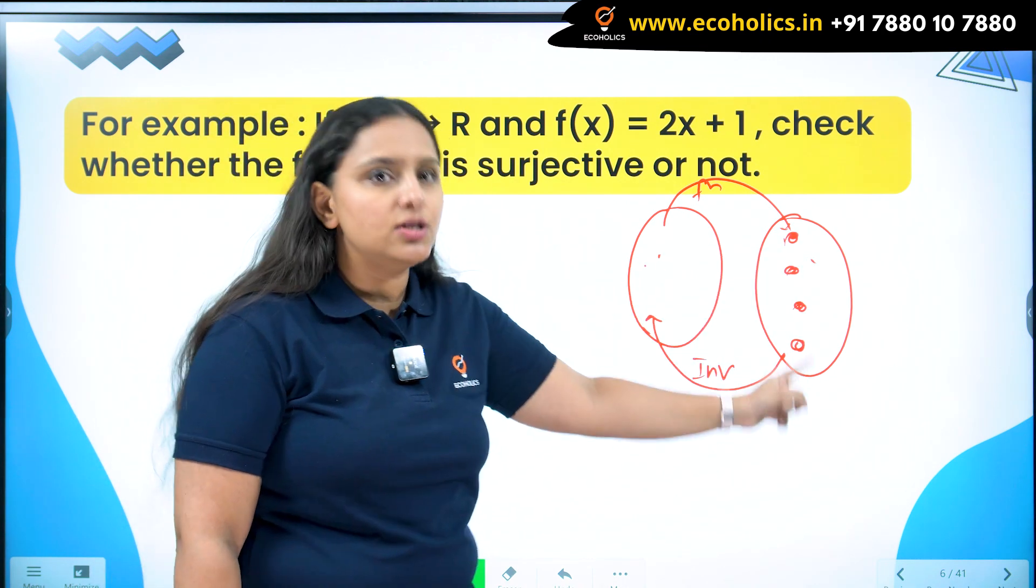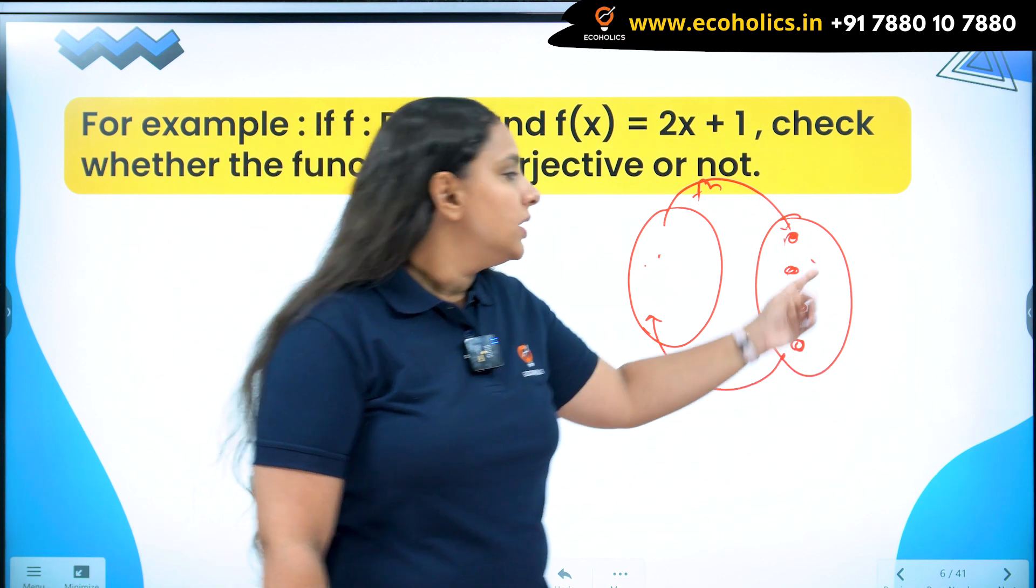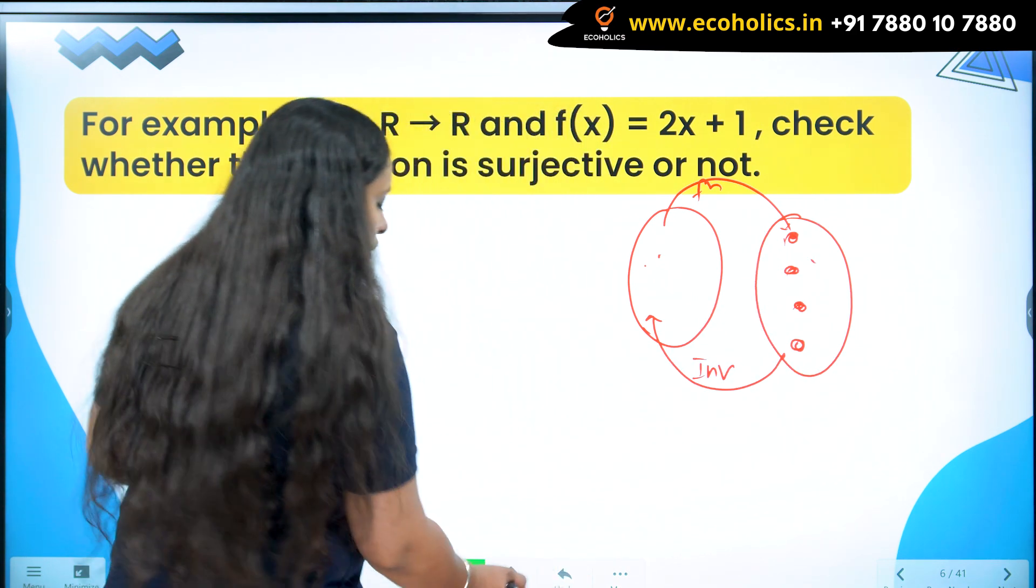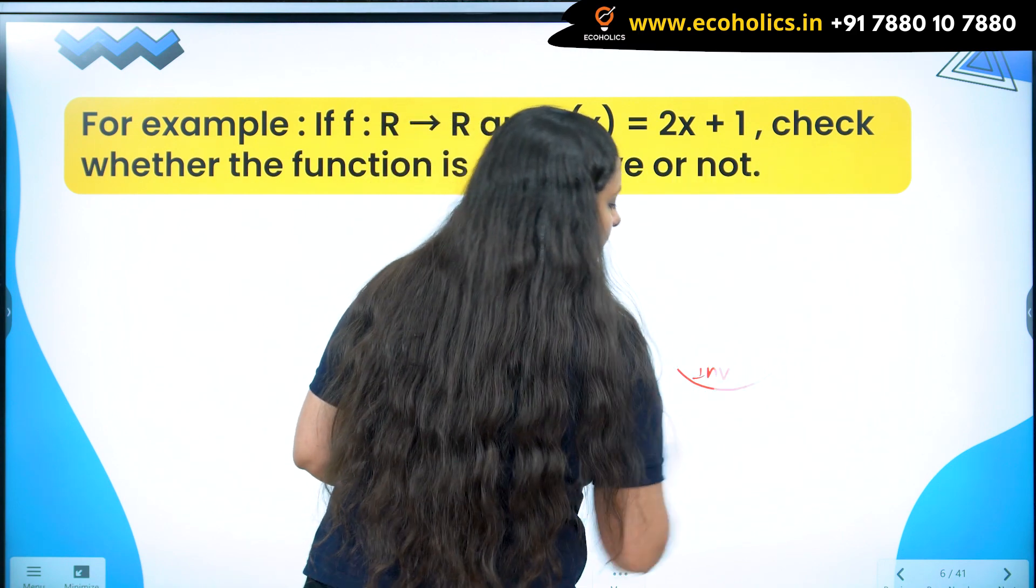I want that every element should have a pre-image here. So for inverse function, since this is the domain, I want to check do I have any free element in my domain or not. It's very simple to check.